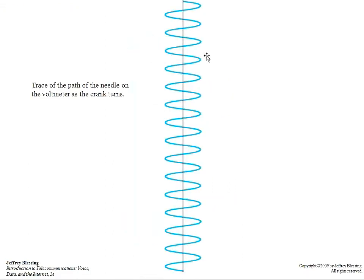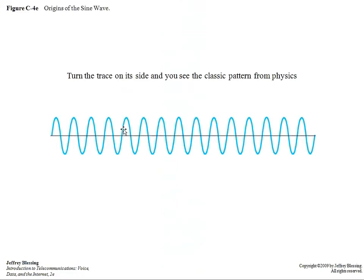If we could put a pen on the tip of that needle and roll paper underneath it as we turn the crank, what we would see is a wave form pattern like this, a back and forth wave form pattern. This in effect is the voltage being produced by that magnetic field. We turn that pattern on its side and we see a classic pattern from physics. This is your traditional sine wave.